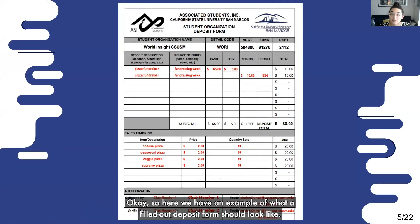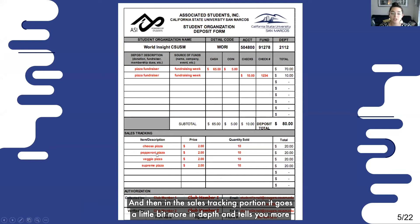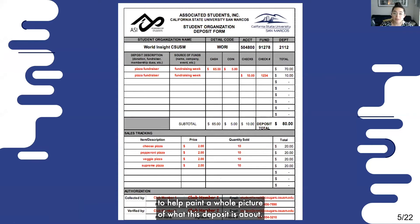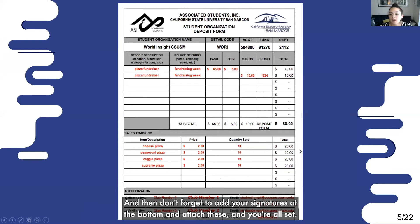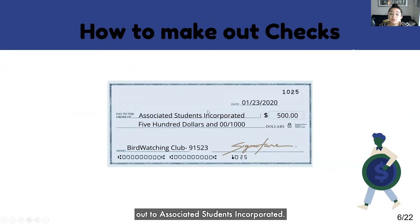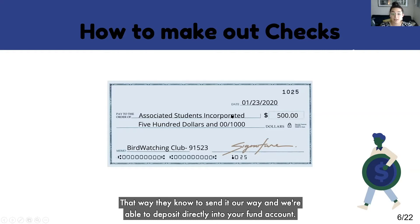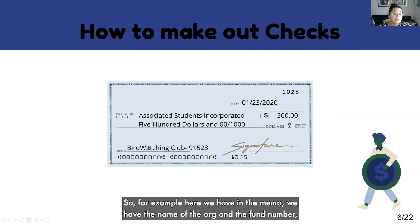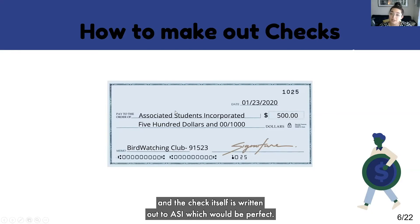Here we have an example of what a filled out deposit form should look like. There's a broad category of 'pizza fundraiser,' and then in the sales tracking portion it goes more in depth with an itemized look at what's happening — you're able to see how much cash, coin, check — all of that information that paints a whole picture of what this deposit is about. Don't forget to add your signatures at the bottom. Also, if a check is being created for your org, always make sure it's written out to Associated Students Incorporated, so it's sent our way and deposited directly into your fund account. Here in the memo you'd have the name of the org and the fund number, and the check itself is written out to ASI — which would be perfect.